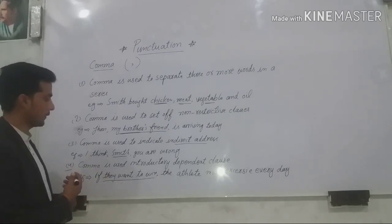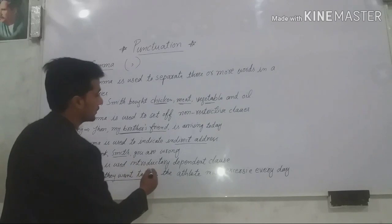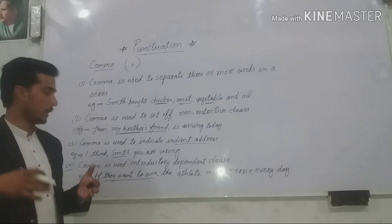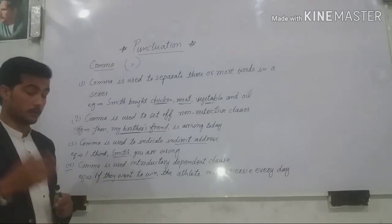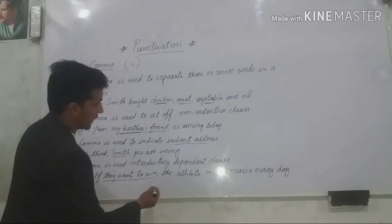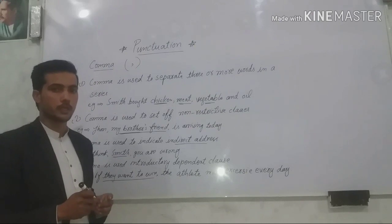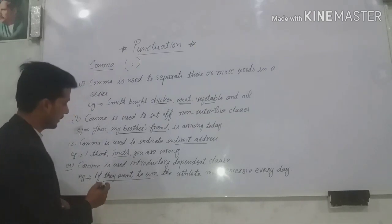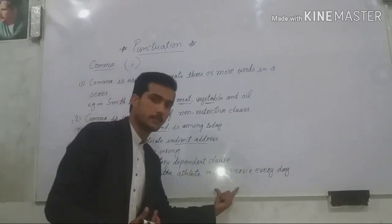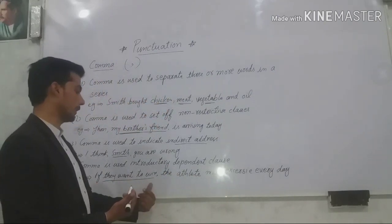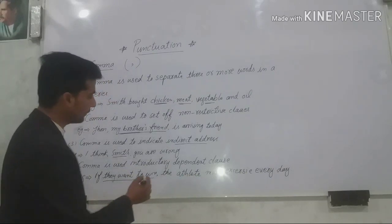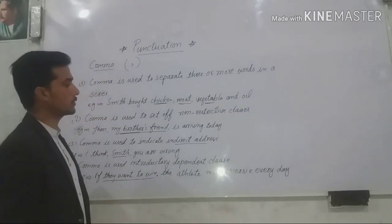The fourth use of comma is, comma is used for introductory dependent clauses. Comma can be also used to show after the introductory dependent clause. Like, if they want to win comma, the athlete must exercise every day. So now you can just look at, if they want to win, this is introductory dependent clause. It depends on this part of the sentence. So just look at, if they want to win comma, the athlete must exercise every day. So after this clause, we will put comma.